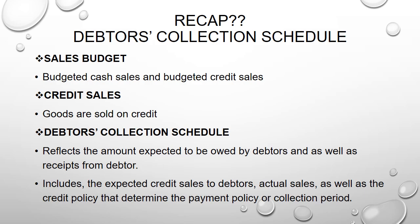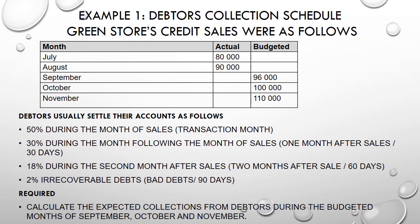Let's look at an example. In this example we're dealing with Green Stores' credit sales. We have been given actual sales as well as projected sales. The important months we should focus more on are the ones that are projected since we're doing a budget — but that doesn't mean we leave out the actual sales months; we do calculate them based on the credit policy. This is why the credit policy is important: it tells us how we're going to collect all our money from the debtors and how much we're going to collect each month.